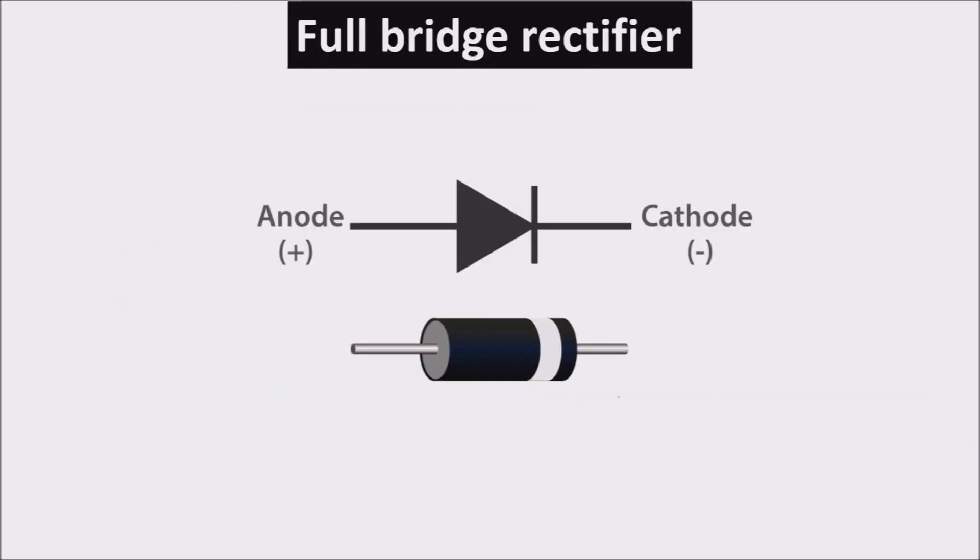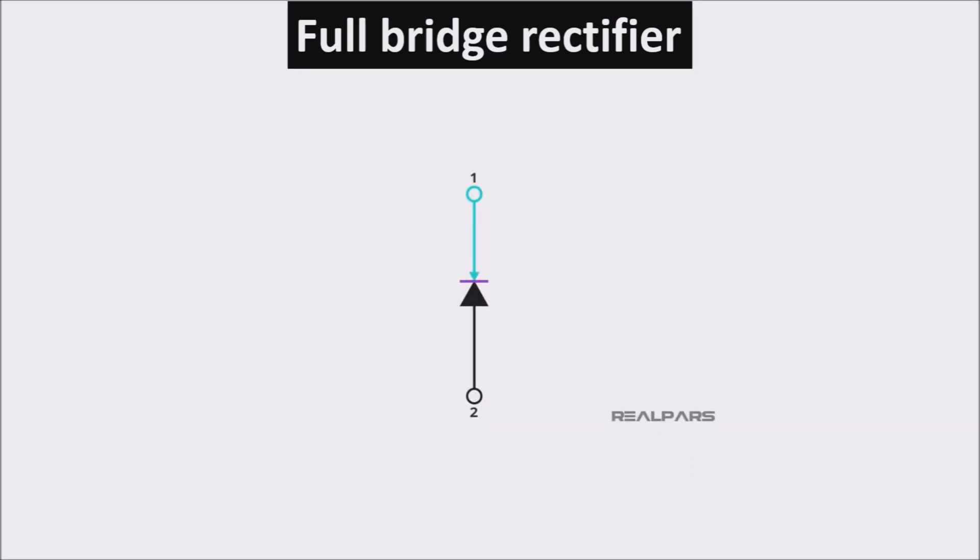In order to rectify the alternating current, we can use a diode bridge. A diode is a component which allows the current to pass in only one direction, blocking it on the other. When the current passes, we have a 0.7 volt drop on the component. Such component is perfect to rectify current and voltage.